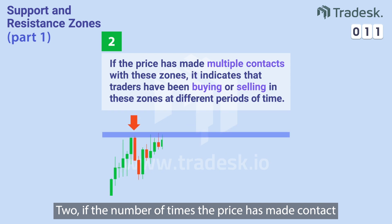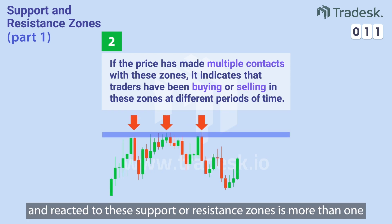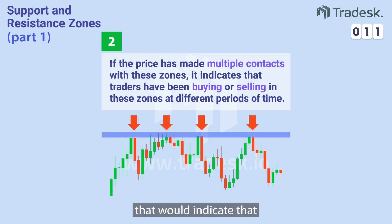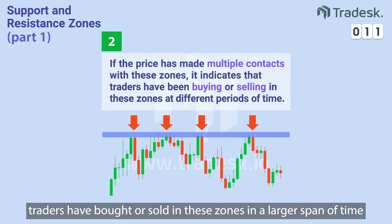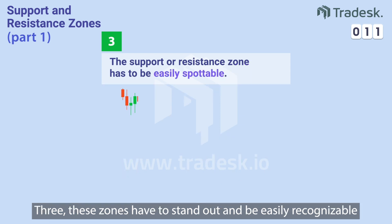2. If the number of times the price has made contact and reacted to these Support or Resistance Zones is more than 1, that would indicate that traders have bought or sold in these zones over a larger span of time.